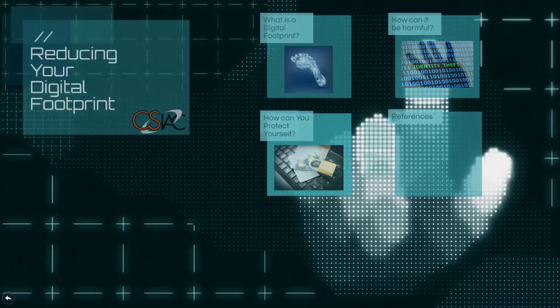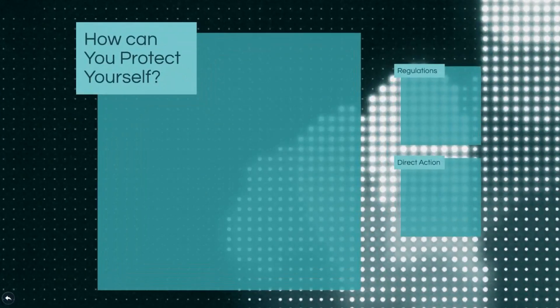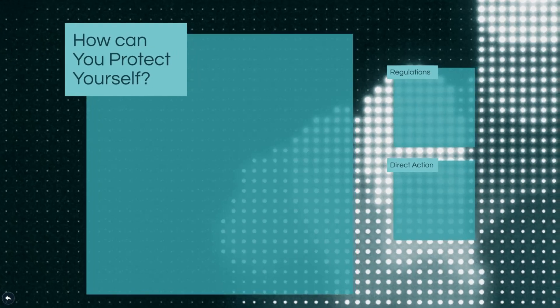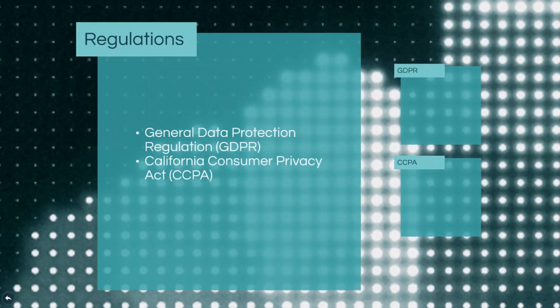There are a couple of different forms of protection that can be employed — in particular, regulations as well as direct actions. Let's first take a look at the regulations. We'll specifically examine two: The General Data Protection Regulation, GDPR, and the California Consumer Privacy Act, CCPA.